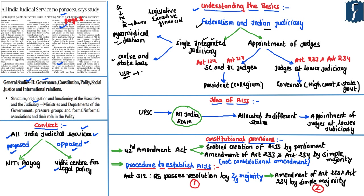In case of USA, the federal laws are enforced by the federal courts, whereas the state laws are enforced by the state courts. So unlike other federal countries, in case of India we have adopted a single and integrated judiciary. However, there are differences in the way judges are appointed at the different levels of the Indian Judiciary. Article 124 provides for the appointment of Supreme Court judges, whereas Article 217 provides for the appointment of High Court judges. Similarly, Articles 233 and 234 deal with the appointment of judges at the lower judiciary, from district courts to subordinate courts.